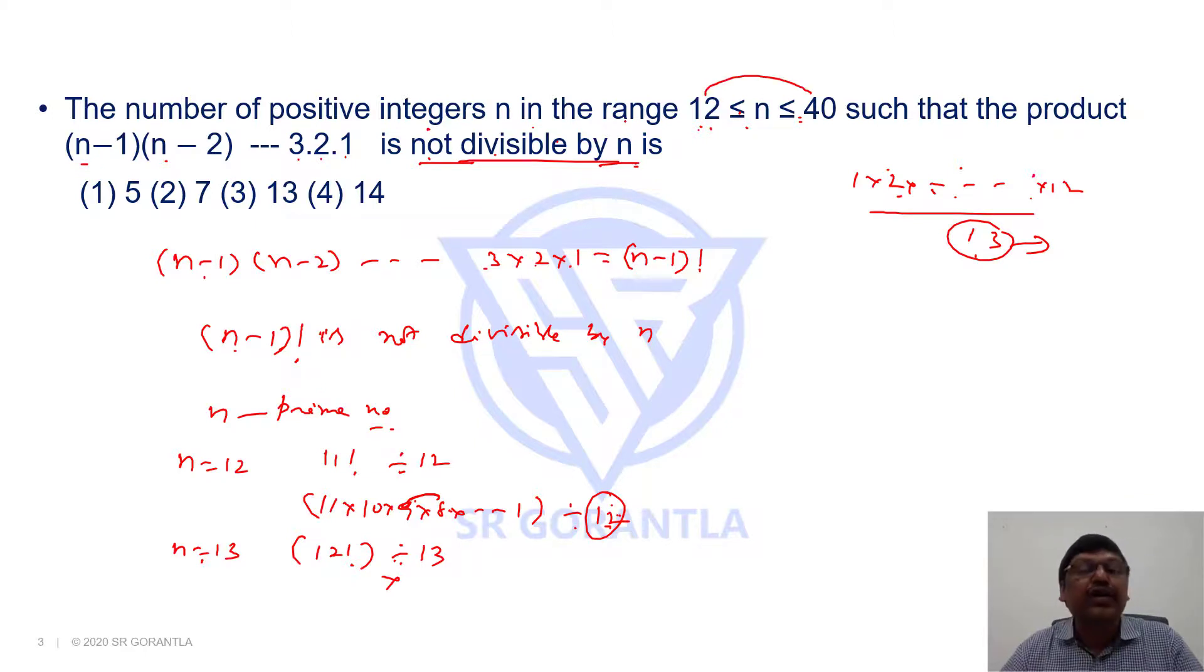So how many prime numbers are there between 12 to 40? We have to check: 13 is a prime number, next 17, next 19, next 23.